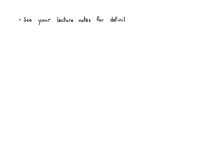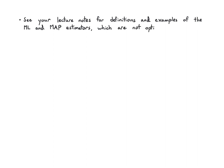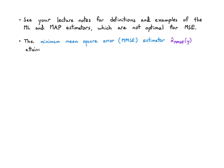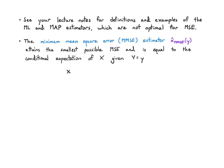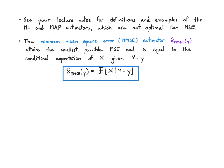One thing we could do — but won't focus on here — is define ML (maximum likelihood) or MAP (maximum a posteriori) estimators. These turn out not to be optimal for MSE in general; they have nice properties and are used in some settings, but they're not optimal. The optimal estimator is what we call the minimum mean squared error estimator, written x̂_MMSE(y). It gets the smallest possible MSE and turns out to equal the conditional expectation of x given y = little y.